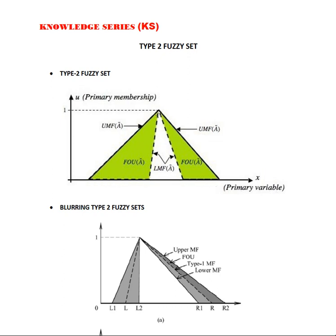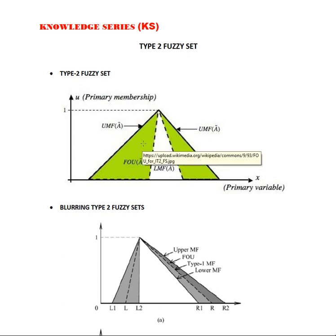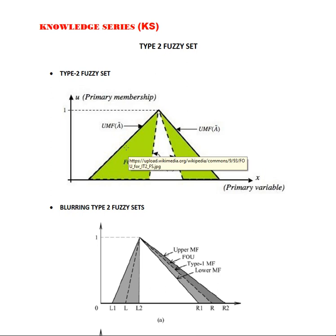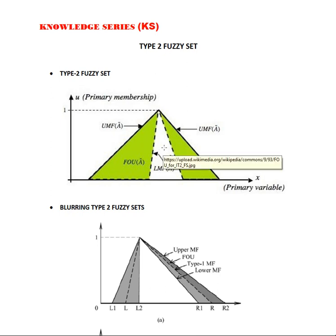The Type 1 fuzzy set was having a single slope, whereas here two slopes exist. This slope area, or the shaded area, speaks about the uncertainty. With respect to this particular figure, we will be having further discussion.